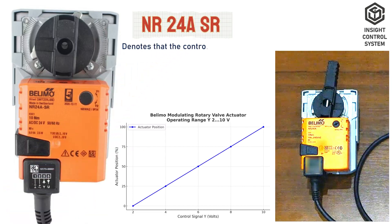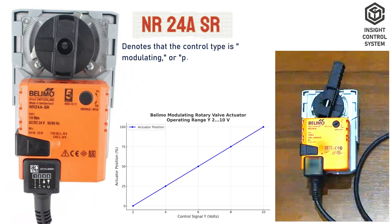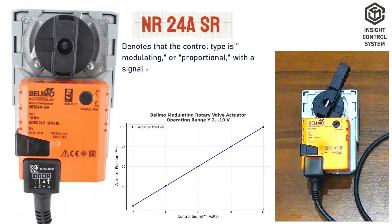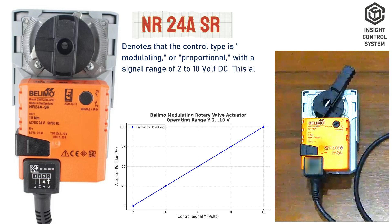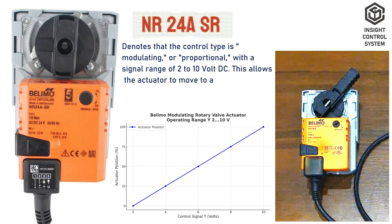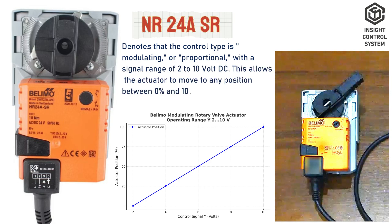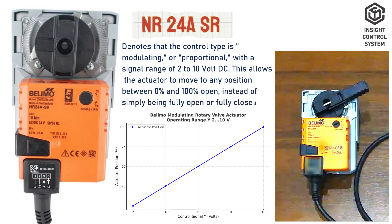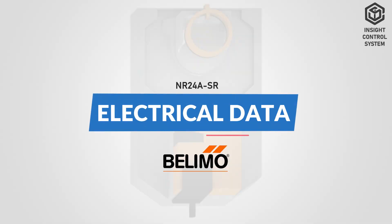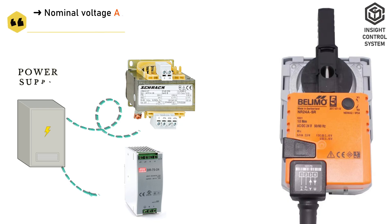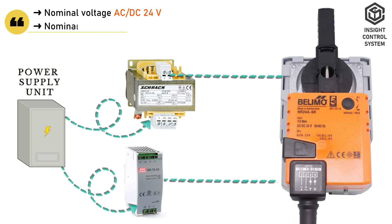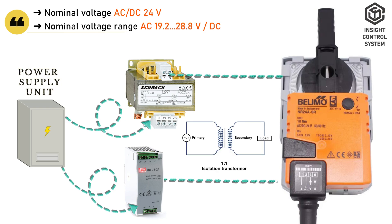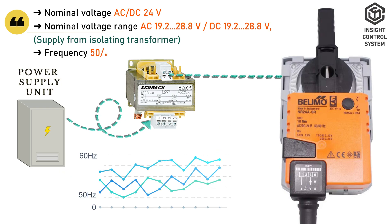SR denotes that the control type is modulating or proportional with a signal range of 2 to 10V DC. This allows the actuator to move to any position between 0% and 100% open, instead of simply being fully open or fully closed. For electrical data: voltage is AC or DC 24V, with supply from the isolating transformer. Frequency is 50 or 60 Hz.